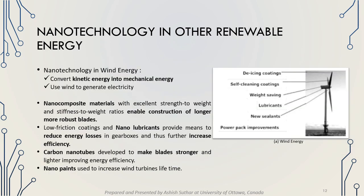Now let's talk about other renewable energy sources such as wind energy. In wind energy, kinetic energy is converted into mechanical energy, and further into electrical energy. Nanocomposite materials with excellent strength-to-weight and stiffness-to-weight ratios enable construction of longer rotor blades. Low-friction coatings and nanolubricants reduce energy losses in the gearbox, improving energy efficiency. Nanopaints are used to improve the lifespan of wind turbines and blades, while carbon nanotubes are used to make blades stronger and lighter.